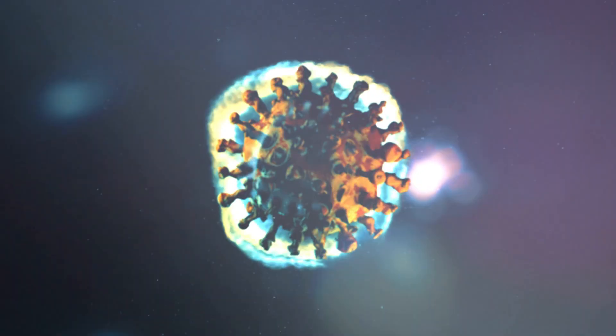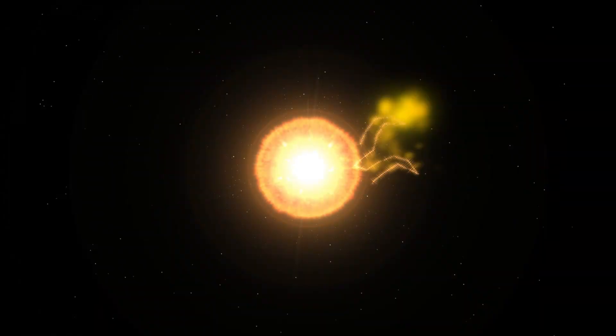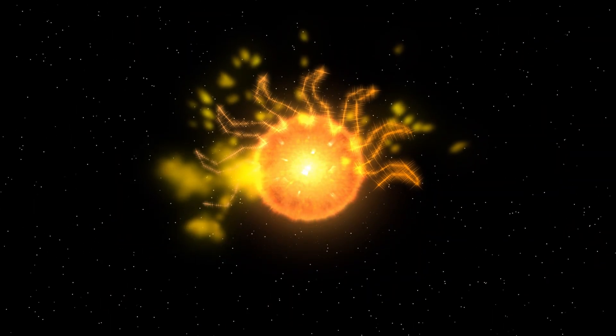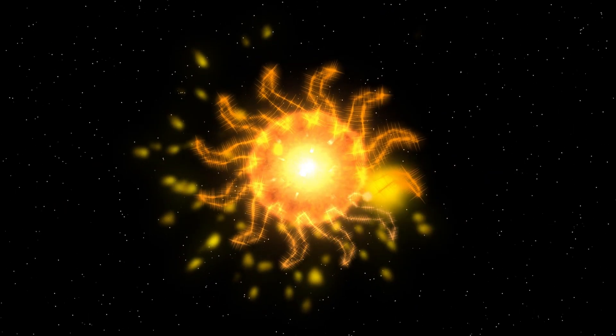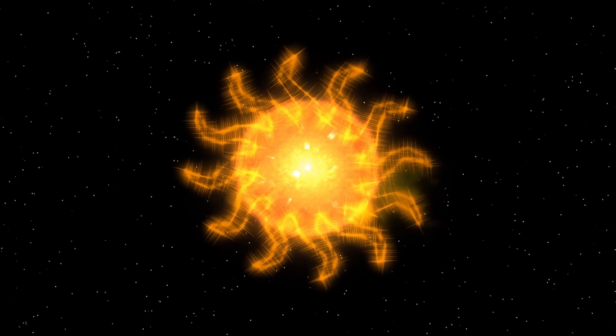Betelgeuse, nearing the end of its life cycle as a red supergiant, exhibits these convective pulsating behaviors more intensely. As the star depletes its nuclear fuel, it will eventually undergo a supernova explosion, marking the end of its life.